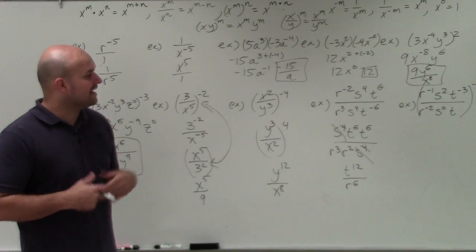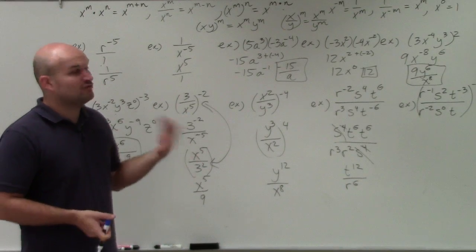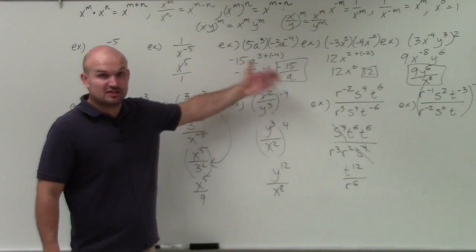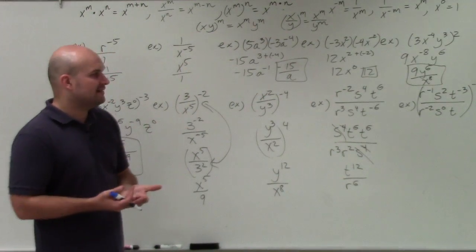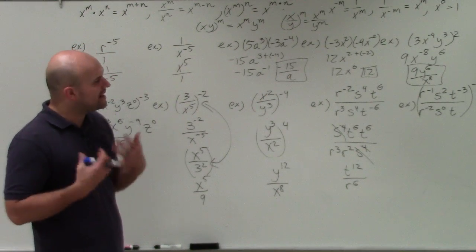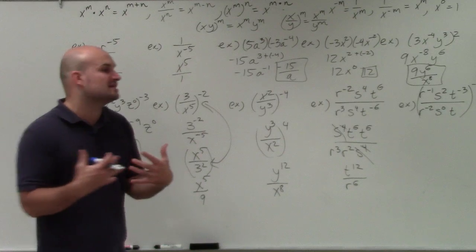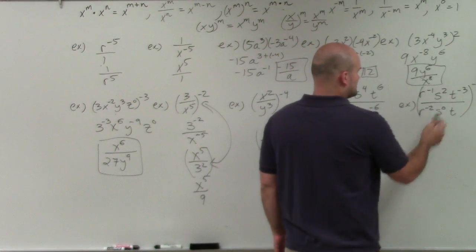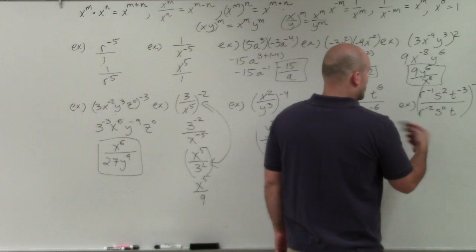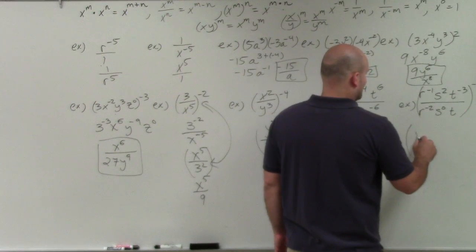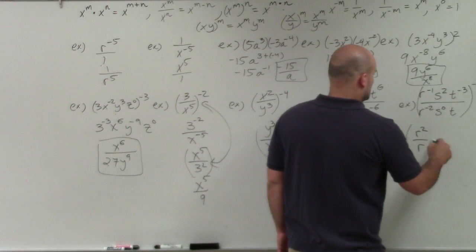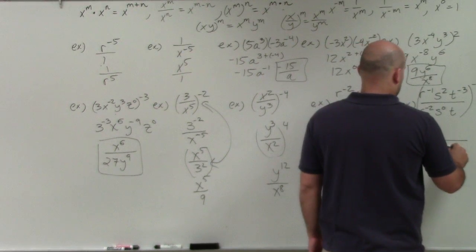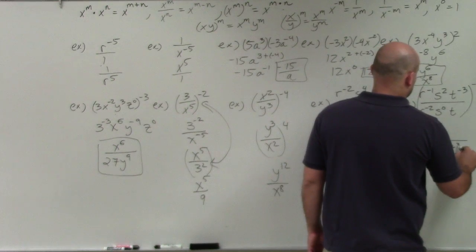Last but not least, we have an expression similar to the one we just did, raised to the negative first power. Remember, that negative simply reciprocates everything. But my preferred approach is to simplify everything inside the parentheses first. You can see that two terms are swapped and go into the denominator. So rewriting the expression, I'll have r squared divided by r; the s's remain the same; and this becomes t times t cubed.